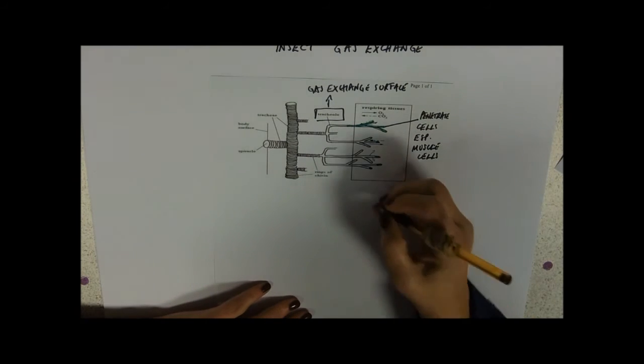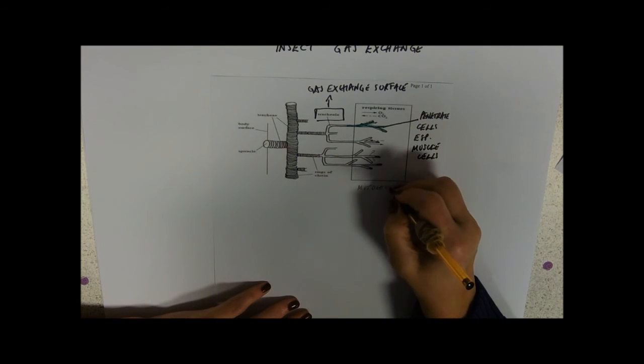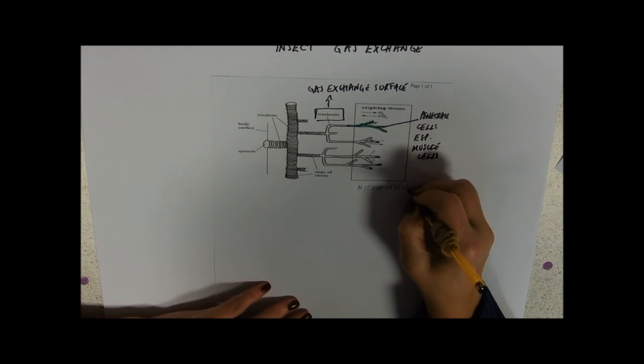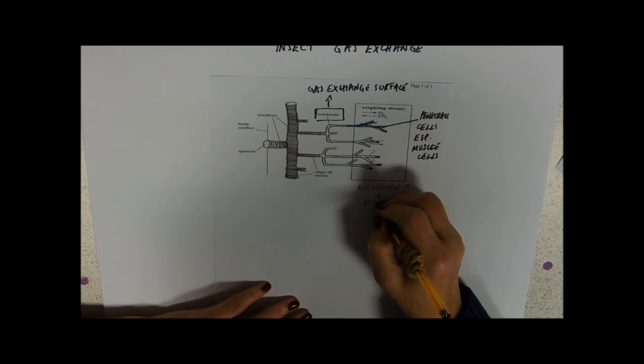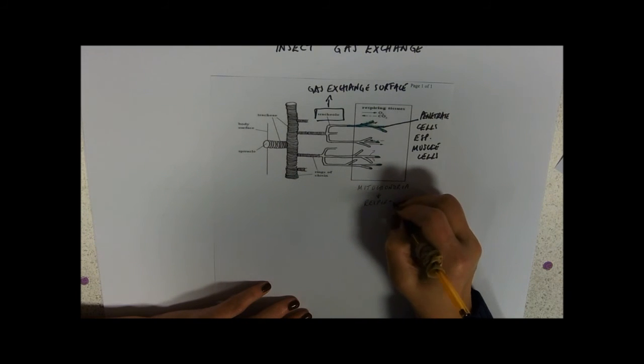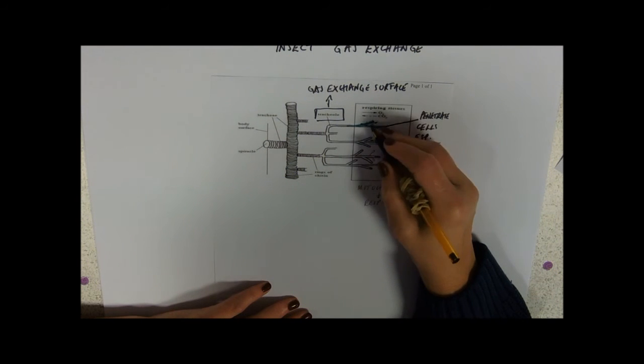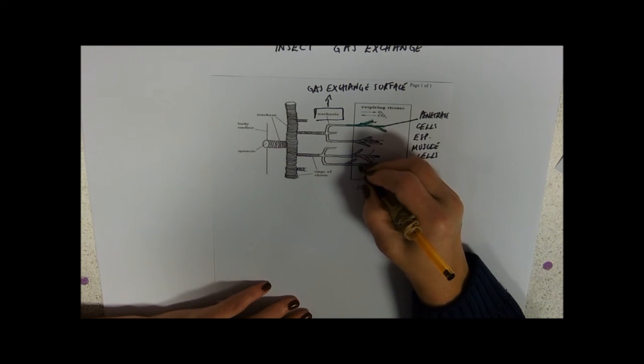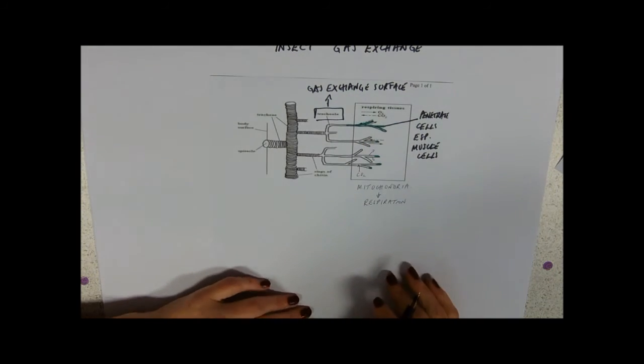Don't forget that where it's delivering oxygen to is to the mitochondria. And what are they using it for? They're using it for respiration. And they are returning then, as we can see up here, they're returning carbon dioxide, which is then going to diffuse all the way along the tubes and to the outside.